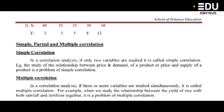What is simple correlation? In a correlation analysis, if only two variables are studied, it is called simple correlation. For example, the study of the relationship between price and demand. If three or more variables are studied simultaneously, it is called multiple correlation.